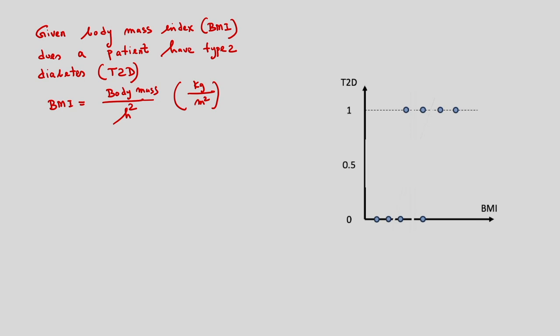For this problem, can we use the linear regression concept? In this figure, I am showing BMI — the body mass index — and also T2D, which is the type 2 diabetes, with sample points. Corresponding to some body mass index values, the type 2 diabetes is 0, and for others it is 1. So this is a binary classification problem.